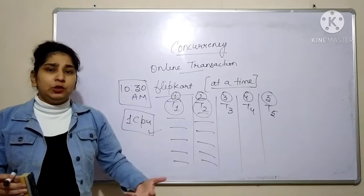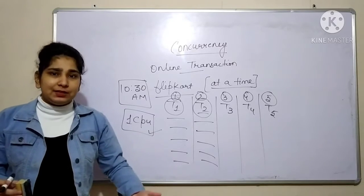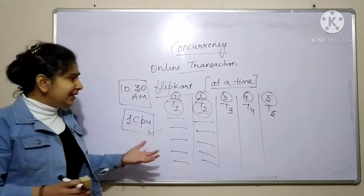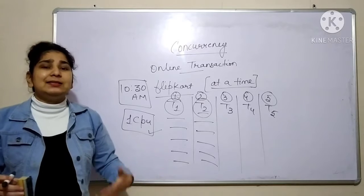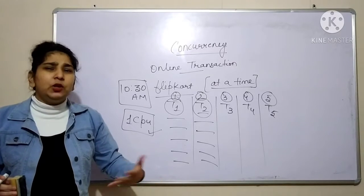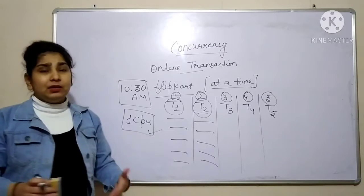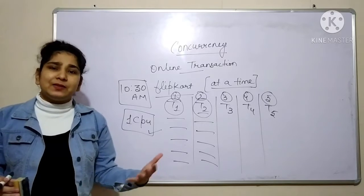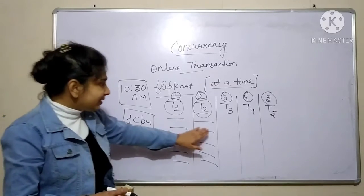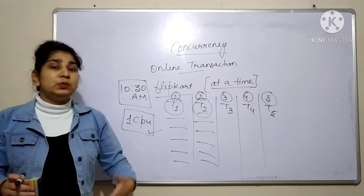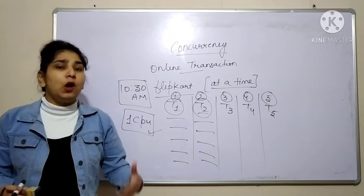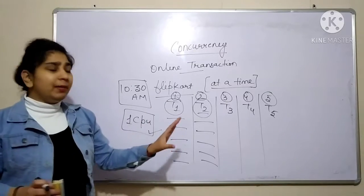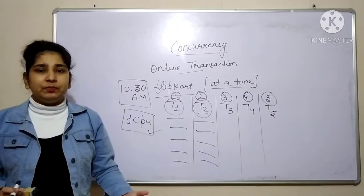Even if you want to open Google.com and it is taking five minutes or two to three minutes to open, then it is a poor network connection. We don't like waiting; we want to execute whatever we want as fast as possible. The waiting time of users in serial execution is very high, so we don't prefer to execute multiple transactions serially, one by one.